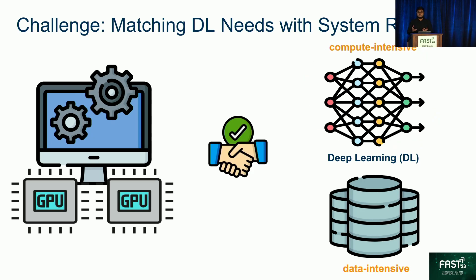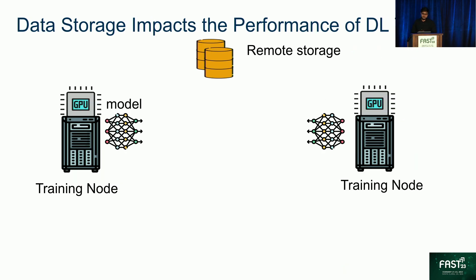To address this, more and more people have counted on using accelerators such as GPUs to speed these things up. We end up in an environment where the application needs and the system needs need to be matched to have optimized performance. To better understand why this is a challenge, let's look at how deep learning works in a distributed setting, in a data parallel setting, which is the most common form of distributed deep learning and hence is the focus of our work.